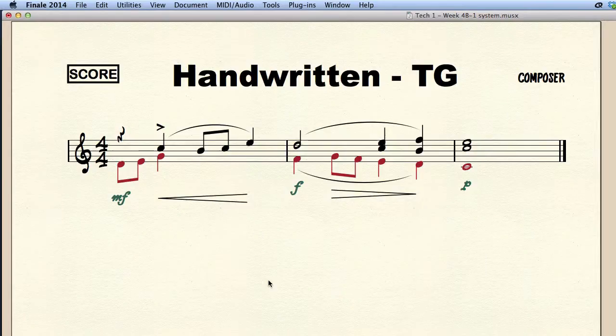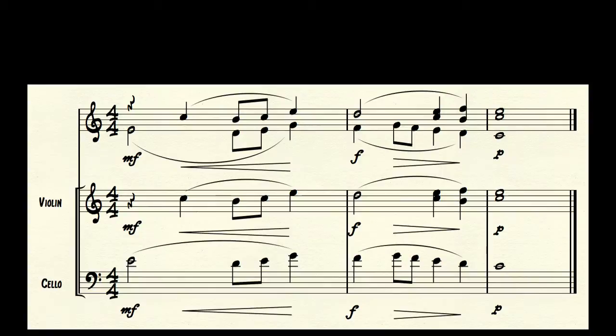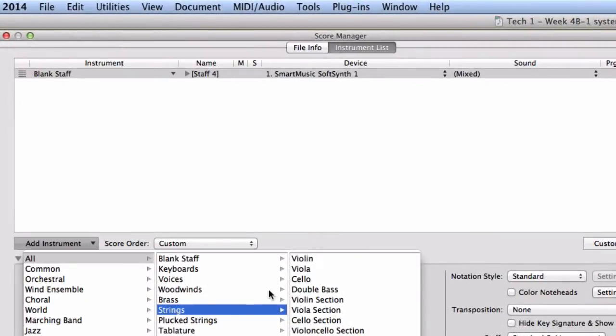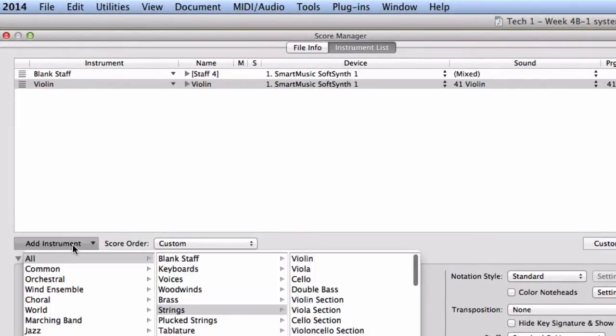To demonstrate how we can copy individual layers onto individual parts I'd like to add a violin and a cello part to the score. Pressing command K opens the score manager where I can quickly add those staves.